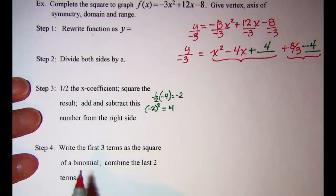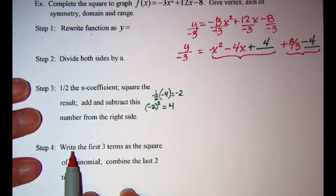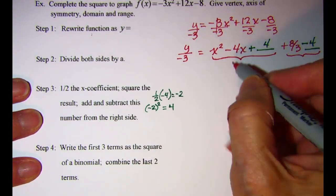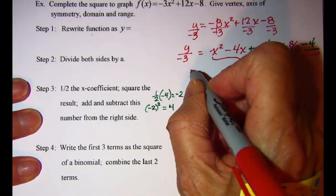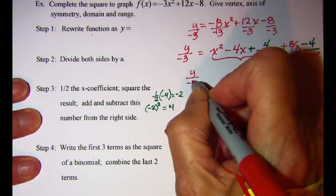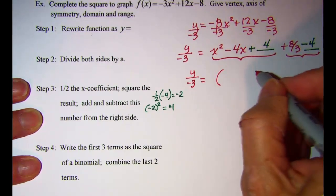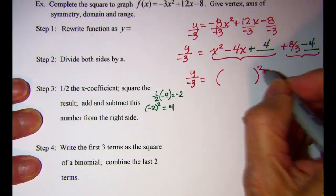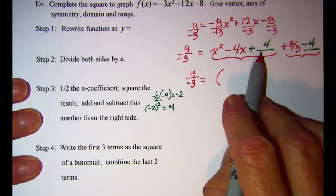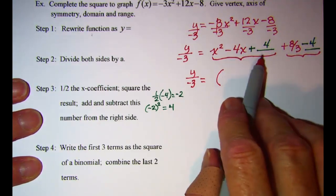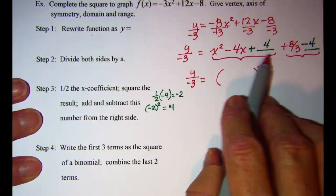In step 4, I want to write the first three terms as the square of a binomial. So let me copy this here: y over negative 3 equals the first three terms. The reason for adding and subtracting 4 was because now I have a perfect square trinomial right here.